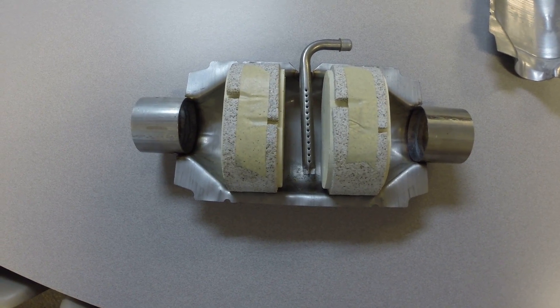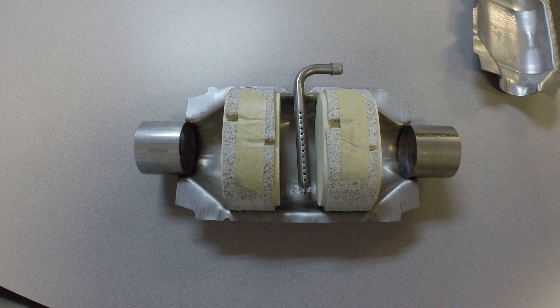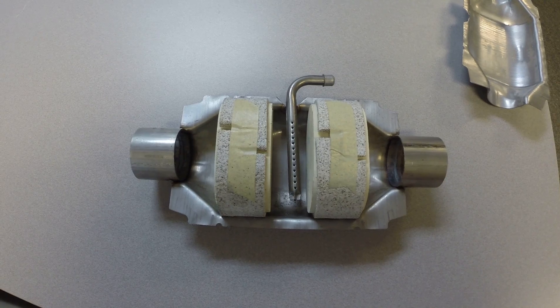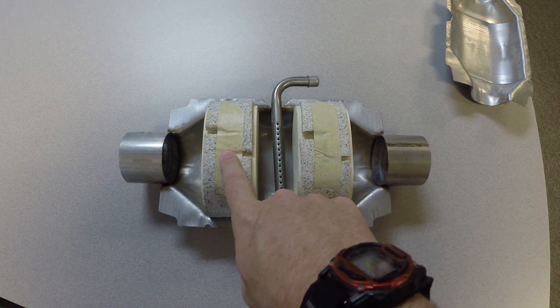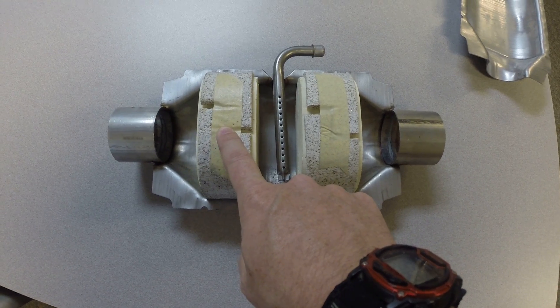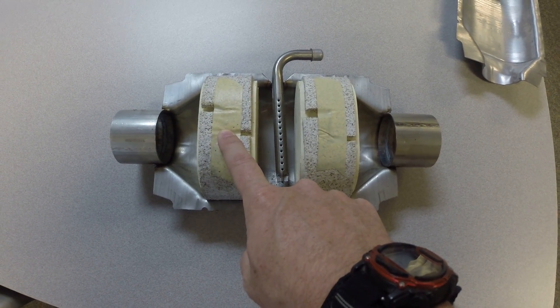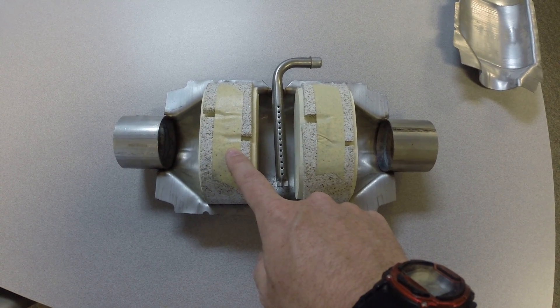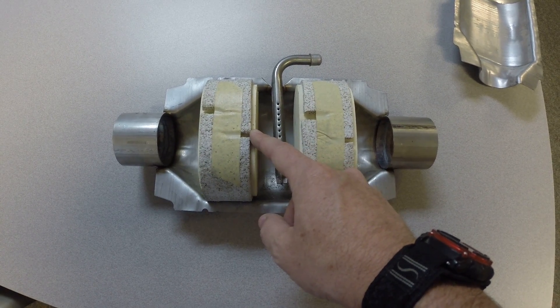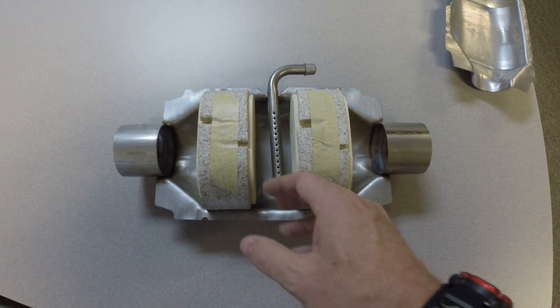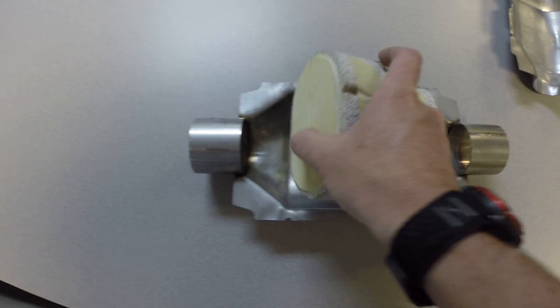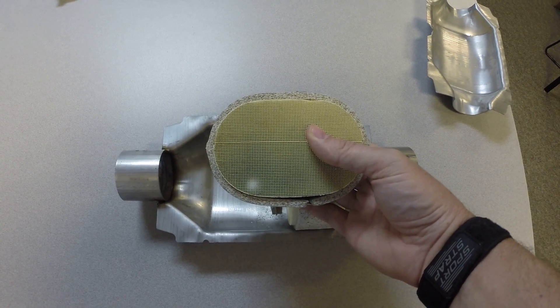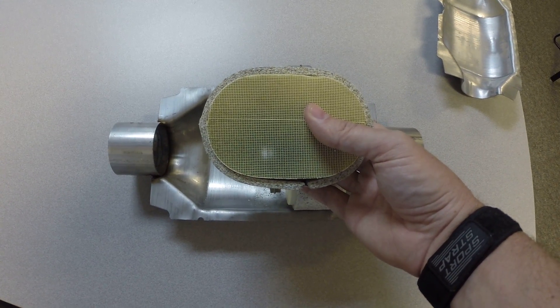And of course to oxidize means to take oxygen and attach it to the molecules that you're dealing with. So in this portion, or in the oxidation portion of the catalyst, we are oxidizing hydrocarbons and carbon monoxide. Hydrocarbons are essentially unburned fuel. So the fuel that passes through here in the form of a hydrocarbon hasn't burned at all. So by oxidizing those hydrocarbons, we're essentially burning the hydrocarbons and that's going to turn them into CO2 and H2O.